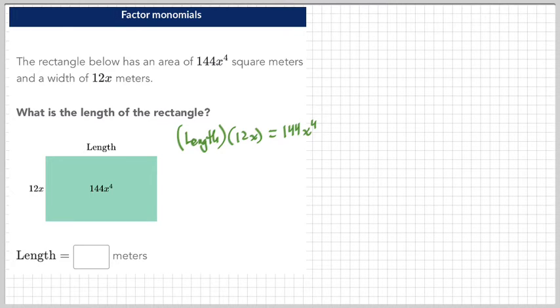If you do it algebraically, you can go - oh yeah, this is the area right here. You could divide both sides by 12x. Because 12x divided by 12x is one, you'd have one multiplied times length. And so then you would get your answer.